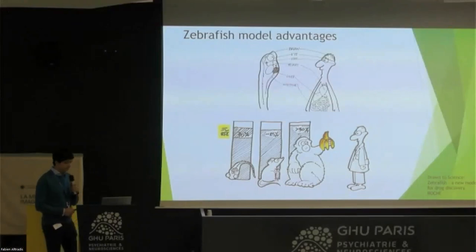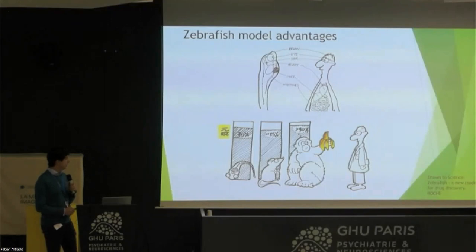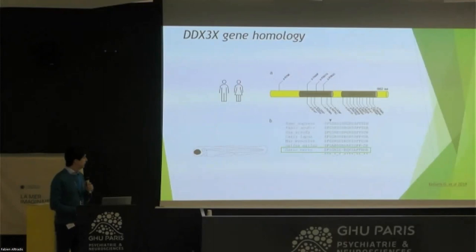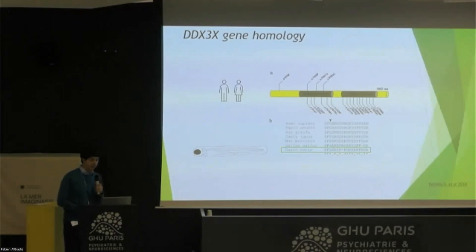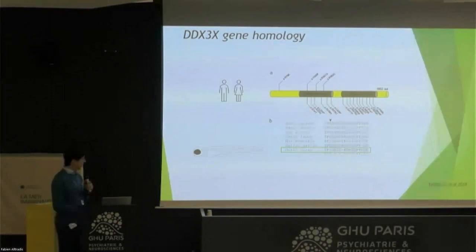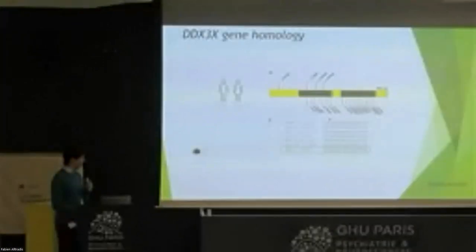These fish can be used to study DDX3X disease. This is the gene scheme of the human DDX3X gene, and this is the protein sequence. In zebrafish, it is almost the same — it has a lot of matches.